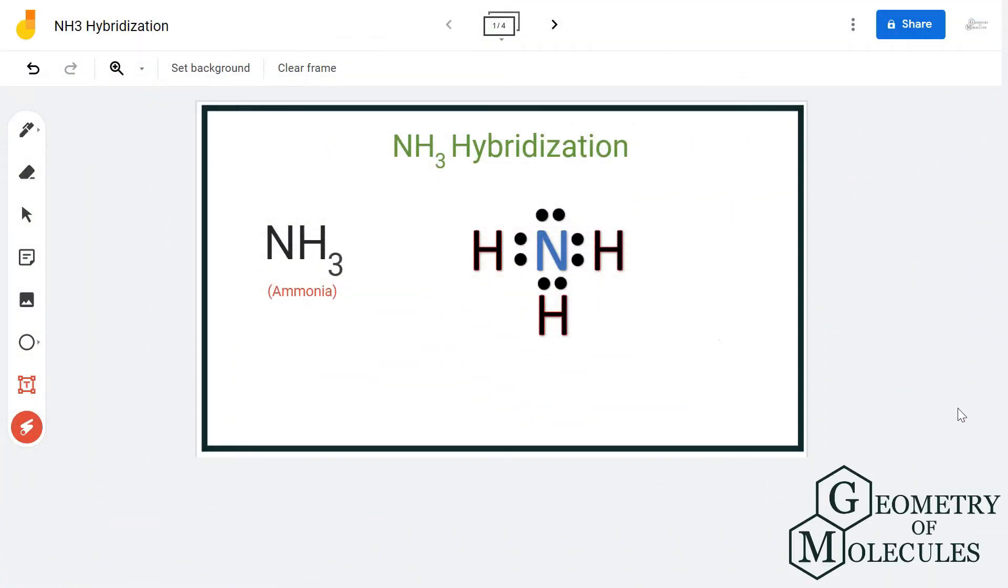Hi guys, today in this video we are going to look at the hybridization for the NH3 molecule, the chemical formula for ammonia. To understand the hybridization, we will go through its Lewis structure and the steric number.